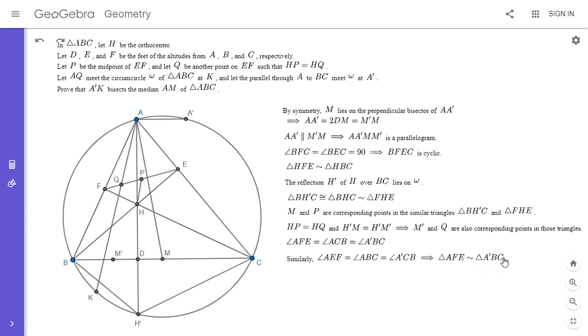So if you look at the two triangles, AFE and A prime BC, this shows that one of the pairs of angles is the same. And we can use the exact same argument for the other pair of angles. And so triangles AFE and A prime BC have to be similar.